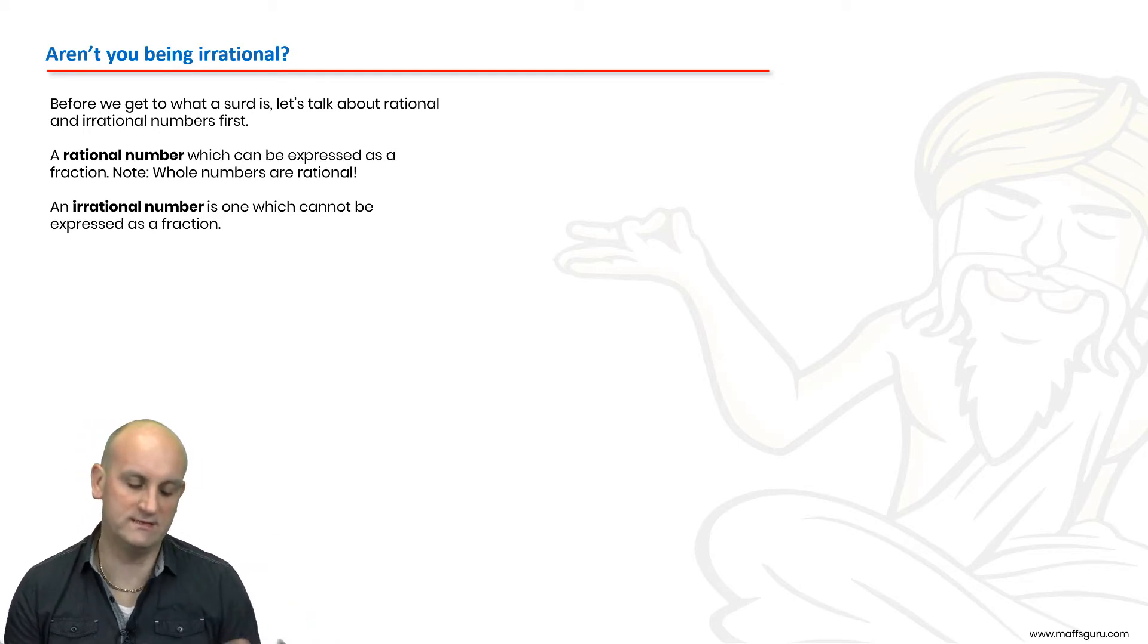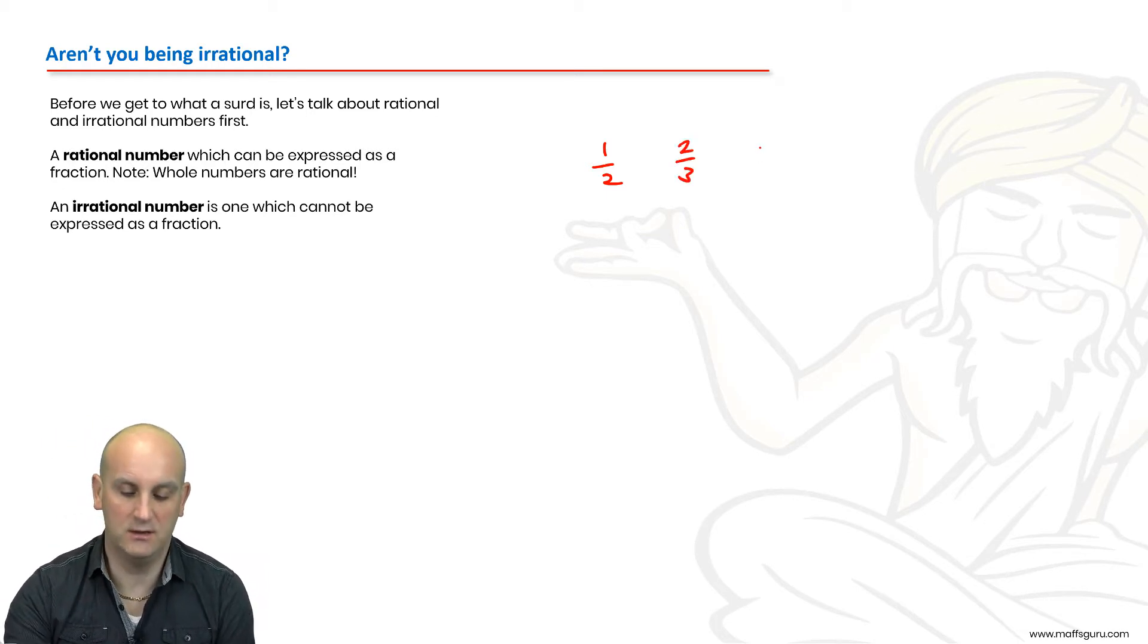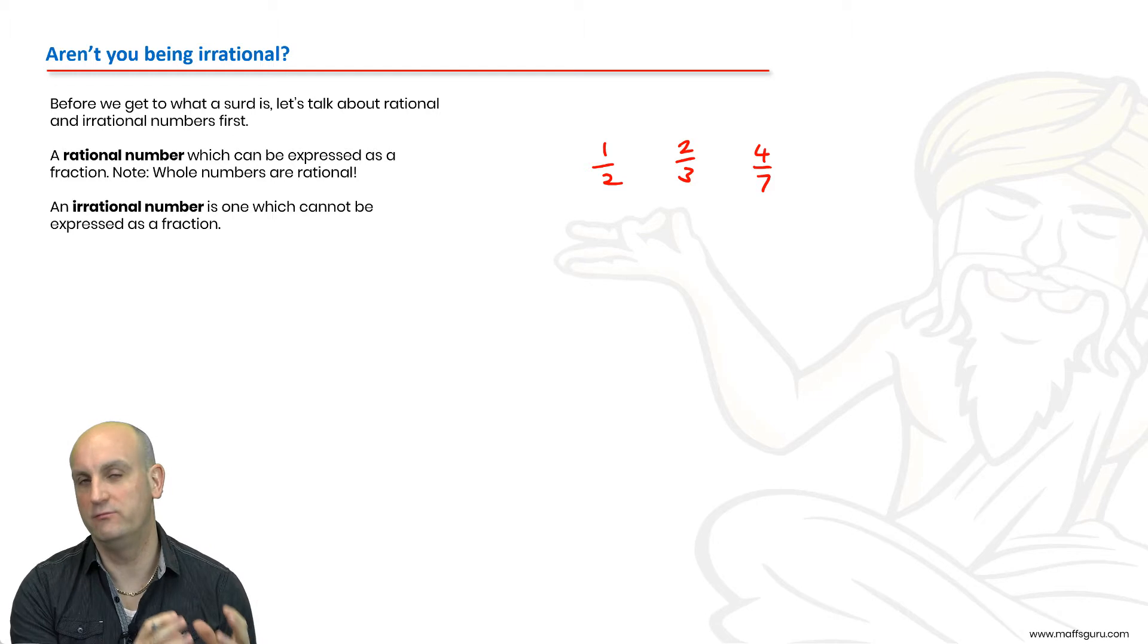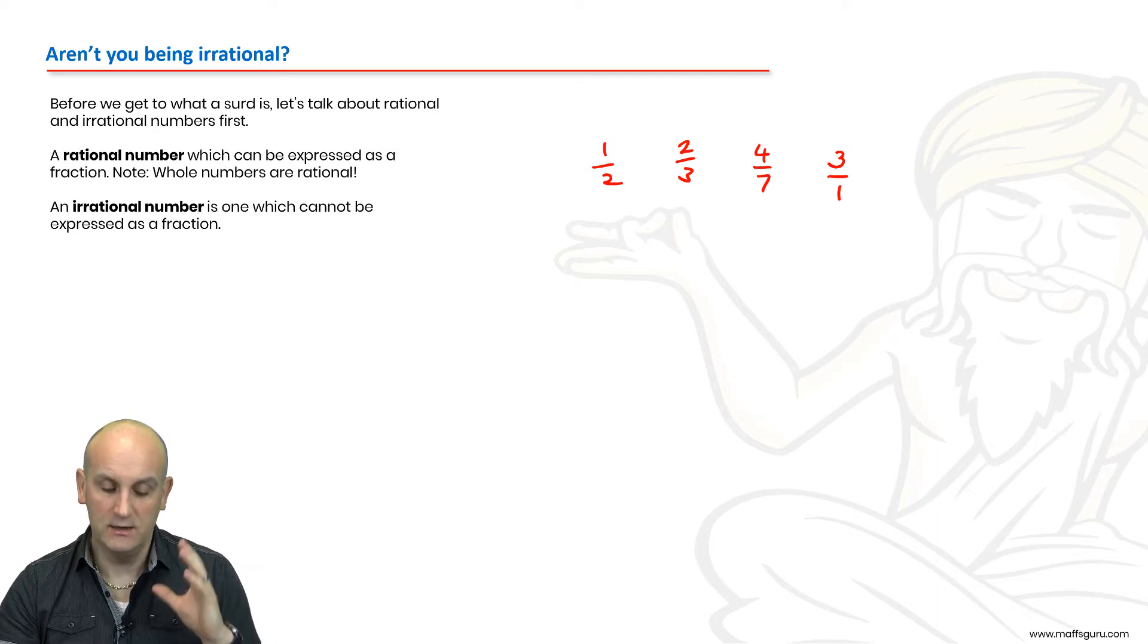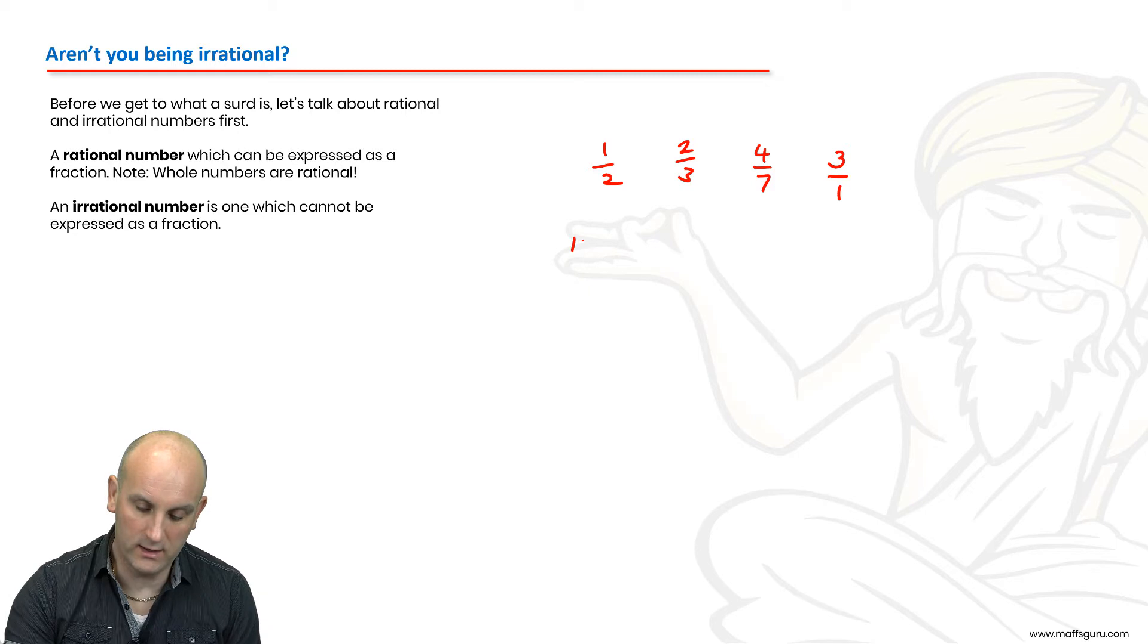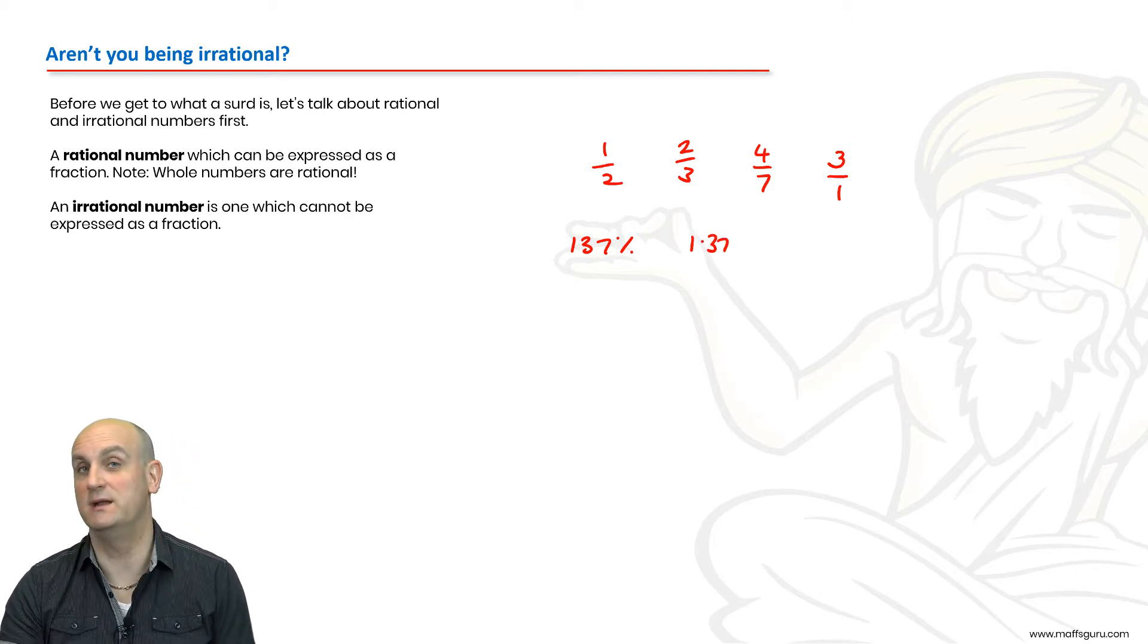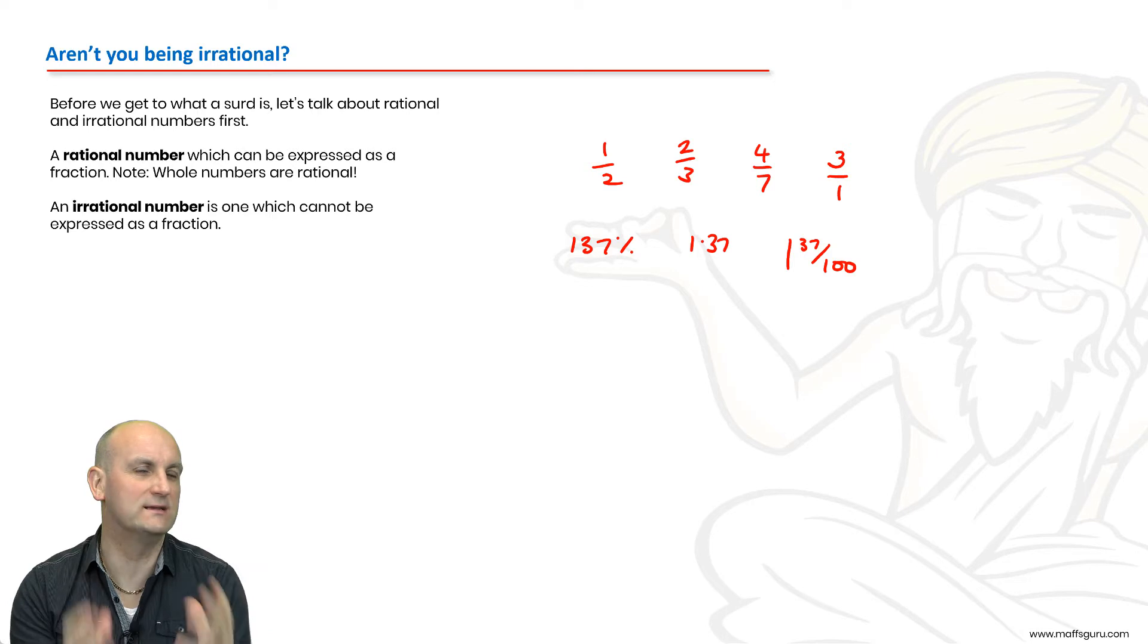A rational number is one that can be expressed as a fraction. Obviously the first one is a half. Is it rational? Absolutely. Give me another one: two thirds, four sevenths. Basically if I put these into my calculator they would either be terminating decimals or there'd be some sort of recurring decimal to them which allows them to be written as a fraction. What about the number three? This tricks people. It's a whole number, yes, but whole numbers are also fractions if I divide them by one as well. So whole numbers are rational as well.